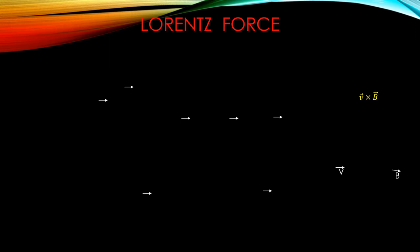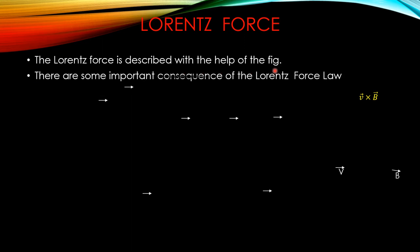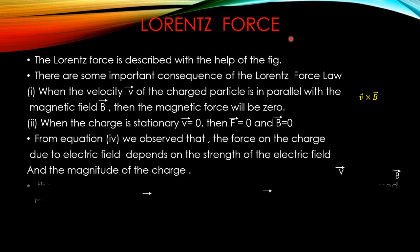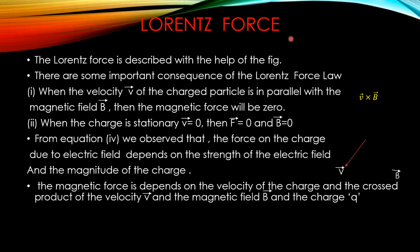Hope you are understanding it. This combined force - electric force plus magnetic force - is called the Lorentz force. The Lorentz force is described with the help of a figure. The cross product V × B is coming exactly perpendicular to this plane - perpendicular to the plane of V and B. The cross product of velocity and magnetic field comes perpendicular to the plane.